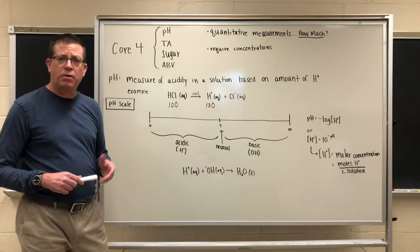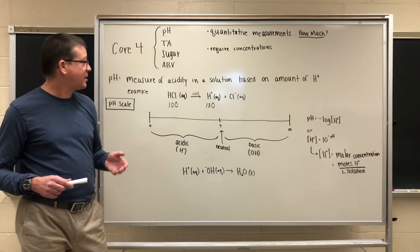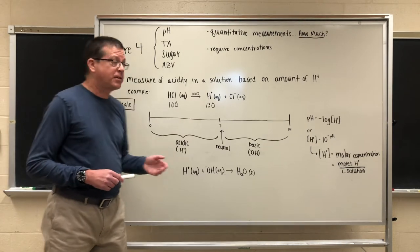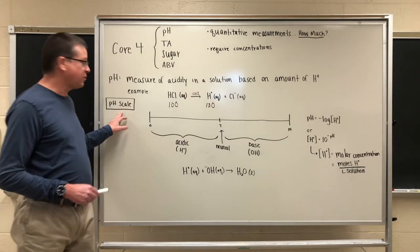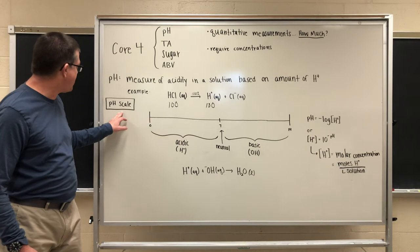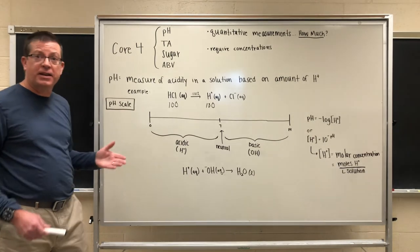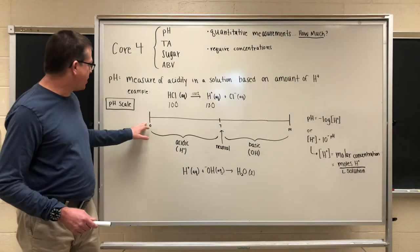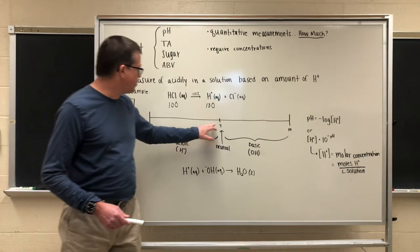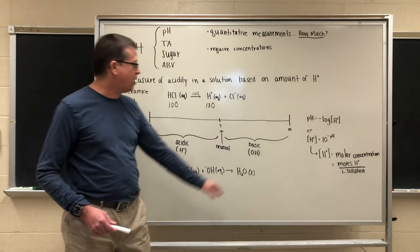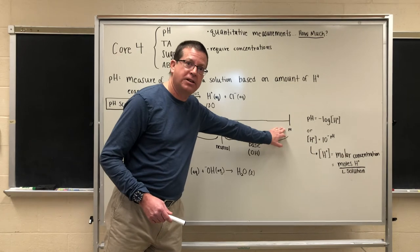To get a good grip on what we mean by the quantitative aspect of pH we have to come back to something that I think most of us are quite familiar with which is the pH scale here. We can think of the pH scale as a number line starting at 0 moving through the neutral point of 7 and on to a high value of 14.